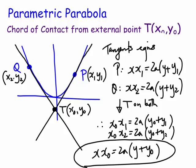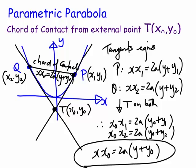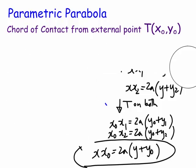So what actually happens is — bingo — this chord of contact has equation xx0 equals 2a(y plus y0). You're actually standing externally to the parabola, firing off a couple of tangents from an external point (x0, y0), and generating what's called a chord of contact. Now let's try to do it via the parametric way — that was the Cartesian way, which is usually the easiest way, and most textbooks do it this way.